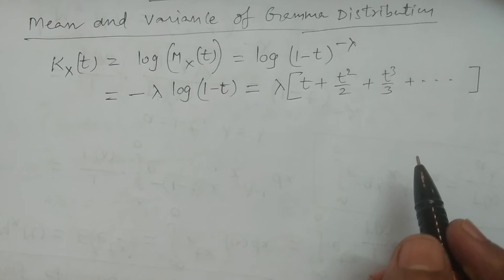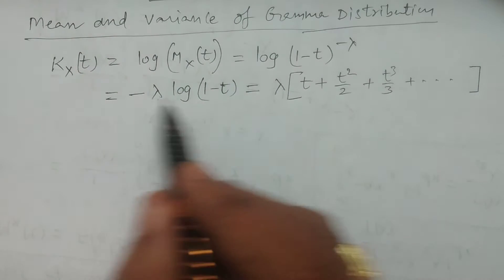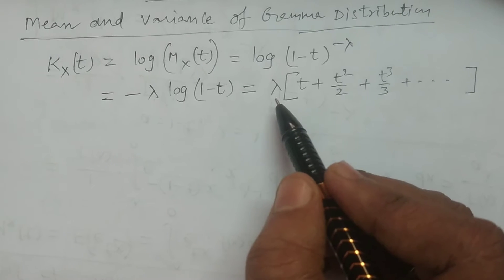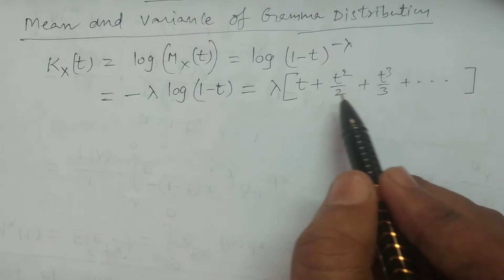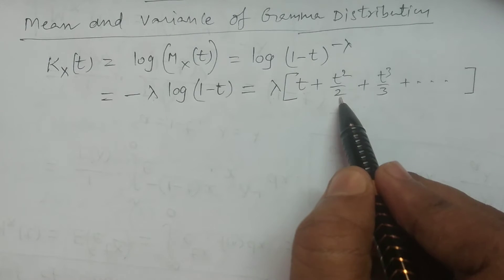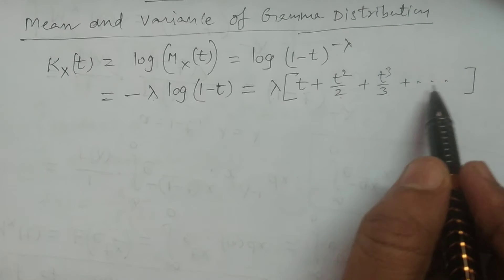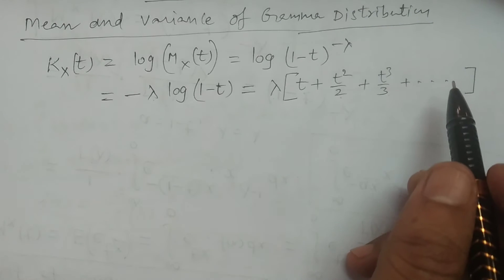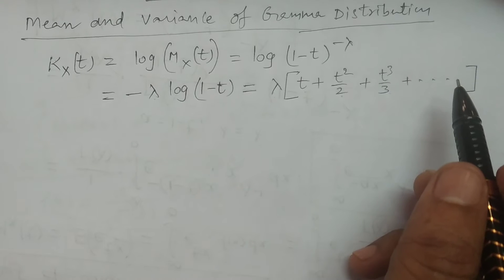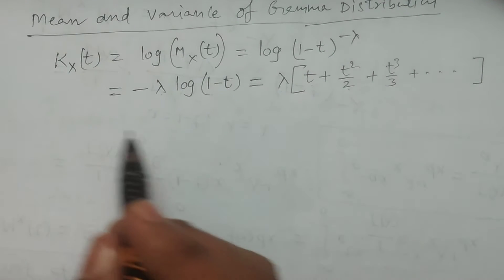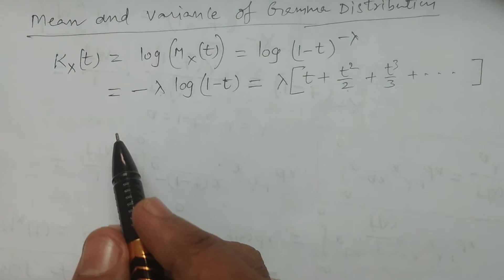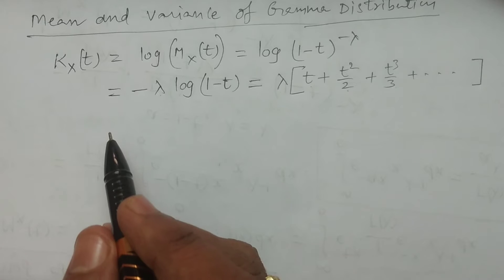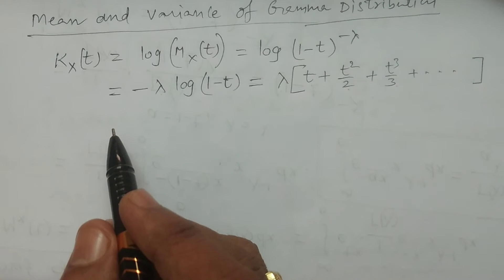Therefore, the cumulant generating function is k(x,t) = lambda times (t + t²/2 + t³/3 + ... + t^r / r + ...). Now we have to calculate mean and variance through the cumulant generating function.